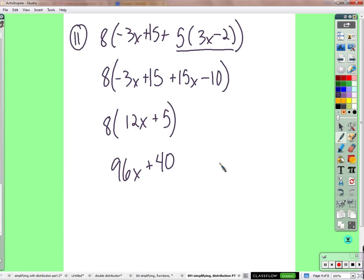I'm confused how you got the second line and the third. They just said negative 3x plus 15x is 12x. Oh, x together. Okay. 15 minus 10. All right.